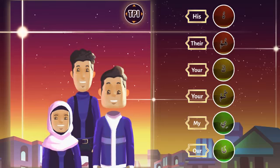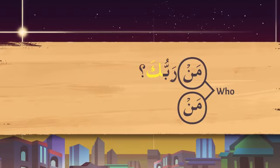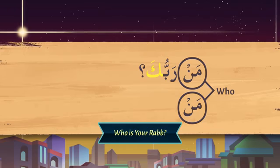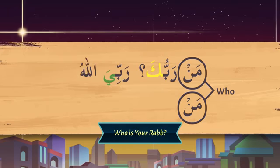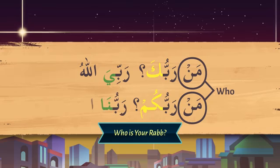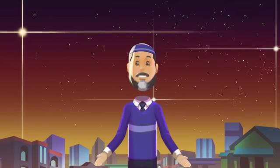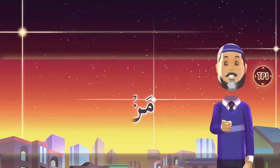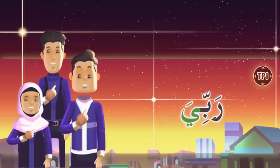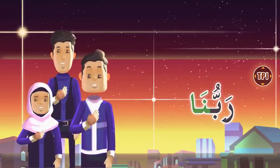Let's say spoken Arabic. Man means 'who.' Man Rabbuka — who is your Rab? You will say Rabbi Allah, and if you join them: Rabbi Allah. Man Rabbukum? Rabbuna Allah. Very good, Masha'Allah. Can you say it once again? Man Rabbuka? Rabbi Allah. Man Rabbukum? Rabbuna Allah.